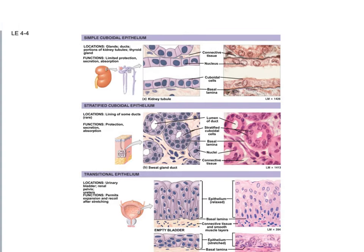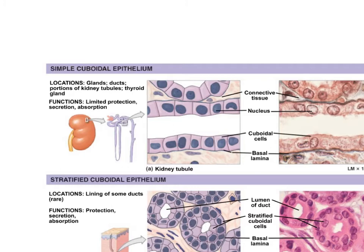Simple cuboidal epithelium: we identify it as cuboidal by looking at the cell shape — they appear cube-shaped. In simple cuboidal there's only one layer of square cells. These cells are a little thicker than squamous cells, providing limited protection, but still just one layer so there isn't much protective function.